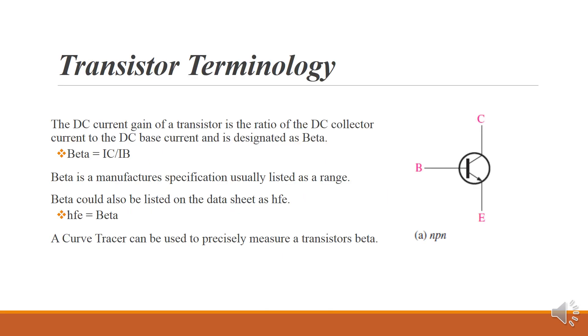BJT transistors are current-controlled devices. The DC current gain of a transistor is the ratio of the DC collector current to the DC base current, and is designated as beta. So beta is equal to the collector current divided by the base current.